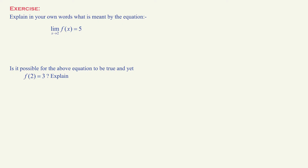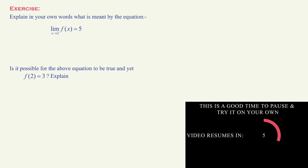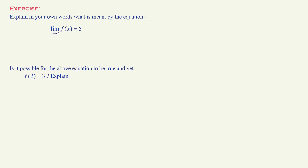I'm going to give you some time to think about it. For part a, the given equation tells us that as the value of x gets close to 2, the value of f of x gets close to 5.